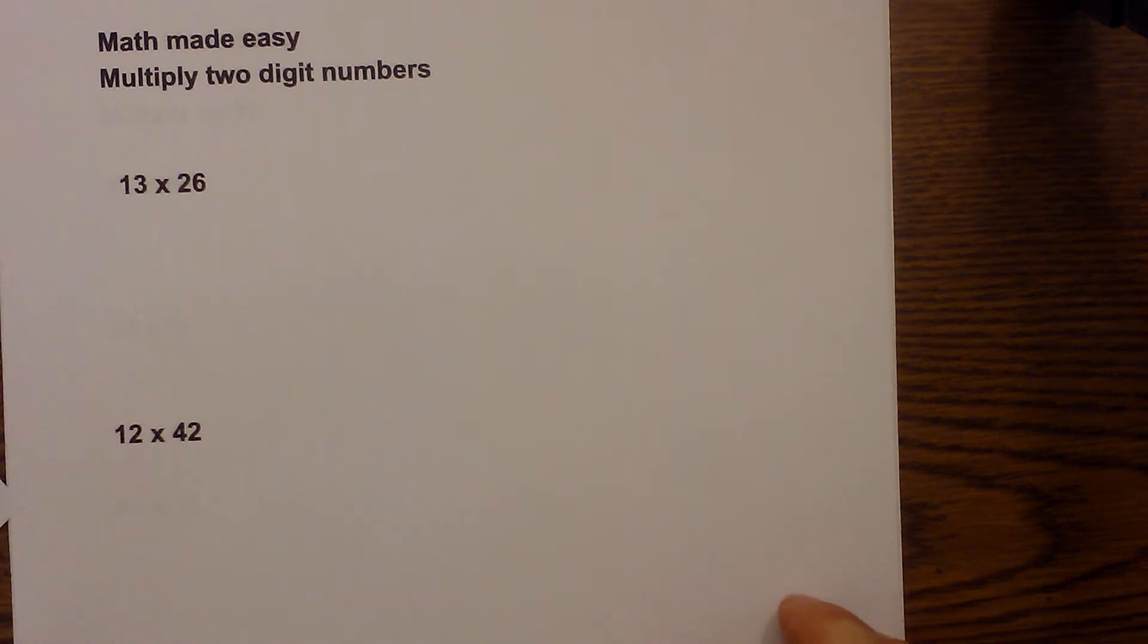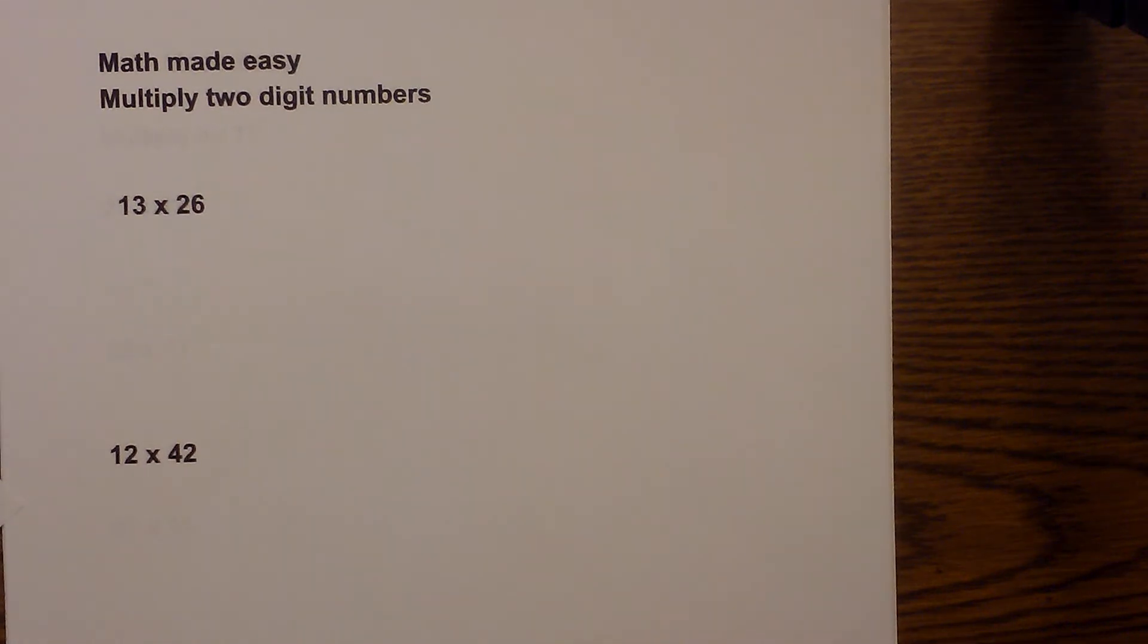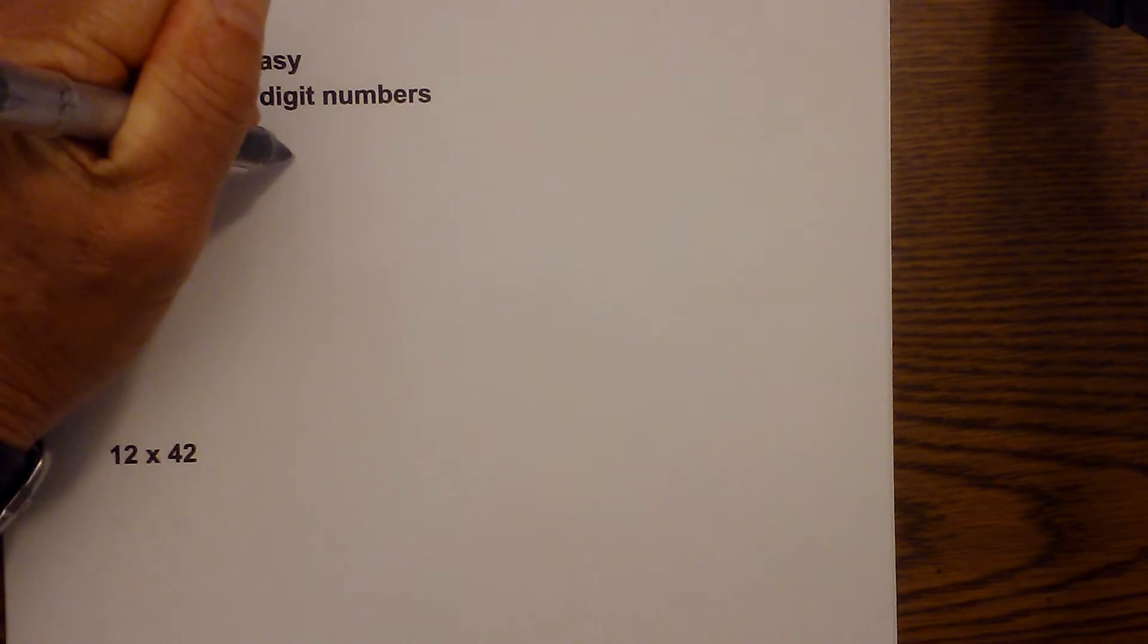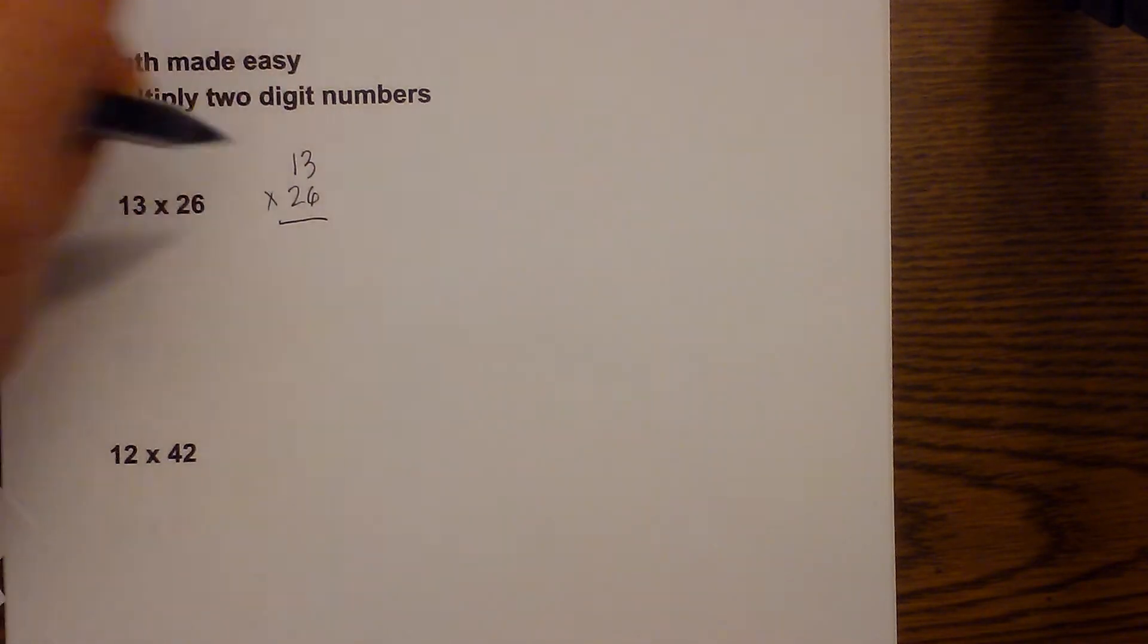Welcome to Moo Moo Math and Science and this series is math made easy. This is a little shortcut for multiplying two-digit numbers. Say we have 13 times 26. I'm going to rewrite this as such and here is your trick.